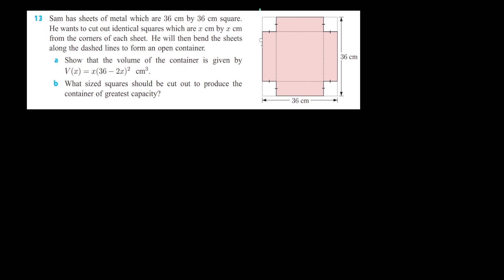So this first question here, Sam has sheets of metal which are 36 by 36 centimeters squared. And he wants to cut out identical squares which are x by x. This tells us immediately that our variable is x and we're going to be removing from the length 36. So all of these sides are x. He's going to fold the sheets upward, and he's going to end up with a container of height x.